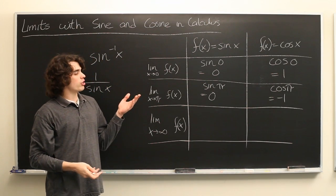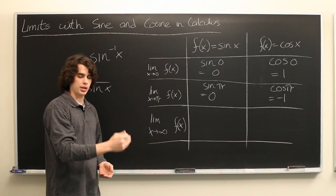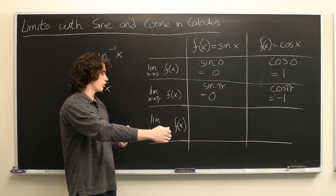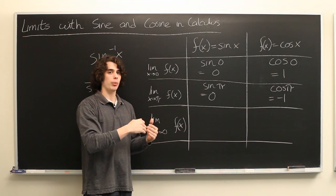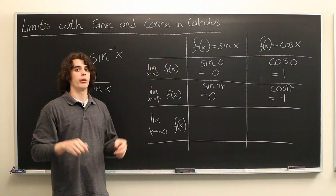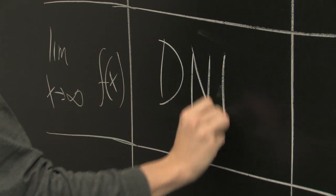But the trigonometric functions don't do any of those things. They just oscillate back and forth between negative 1 and positive 1. No matter how far out you go towards positive infinity, there will not ever be a point beyond which the function will have normal end behavior. So, these limits do not exist.